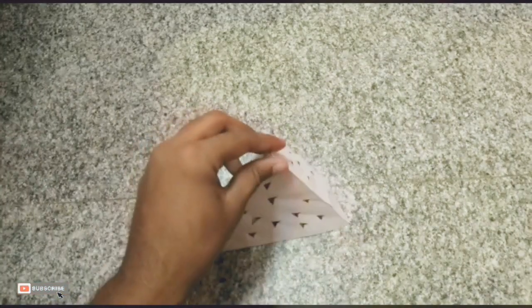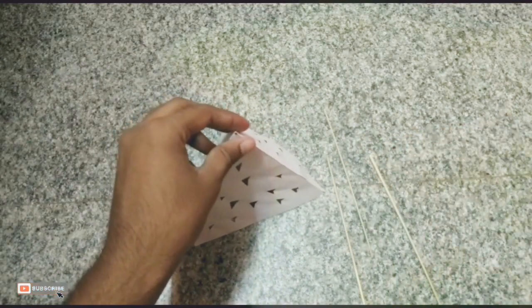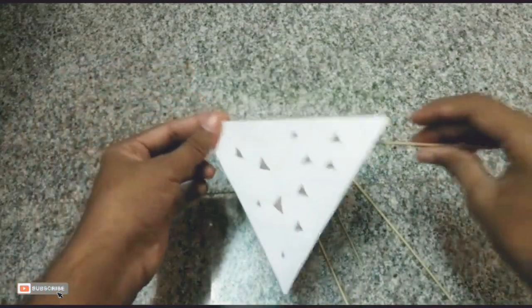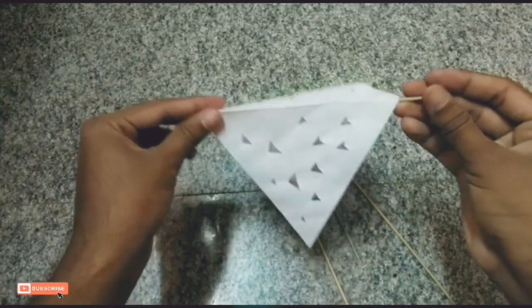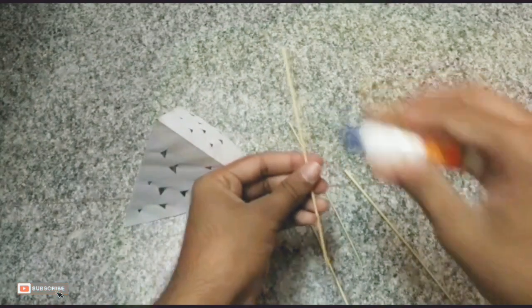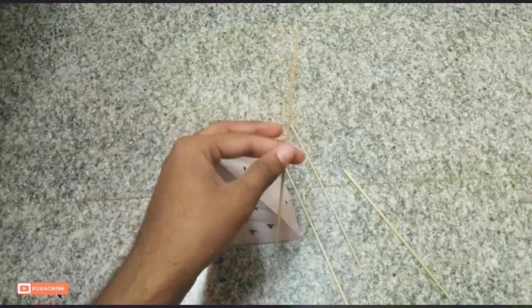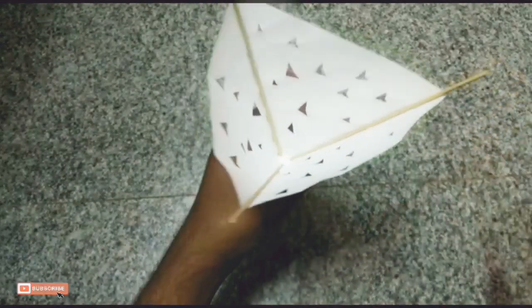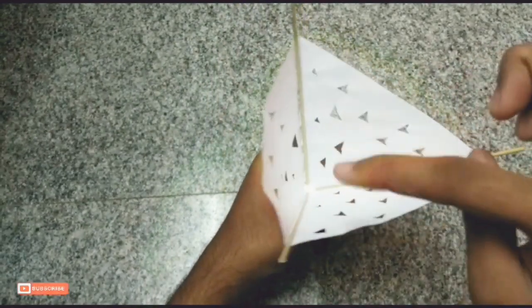After fixing, take the sticks or a toothpick to fix at the ends of the triangle as shown in the video. We should fix the sticks with the help of glue to fix it strongly and perfectly. We have fixed the three sticks with the help of glue.